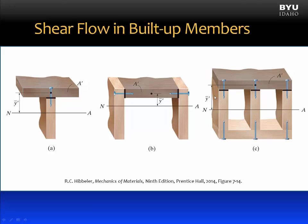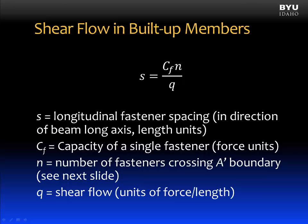Y-bar-prime is the distance from the centroid to the neutral axis. Another useful equation is the equation for spacing of fasteners, where S is the longitudinal fastener spacing — in the direction of the long axis of the beam — with units of length such as meters or inches. C-sub-F is the capacity of a single fastener, specifically its shear capacity. N is the number of fasteners crossing the A-prime boundary. Small q is shear flow, calculated with the previous equation.